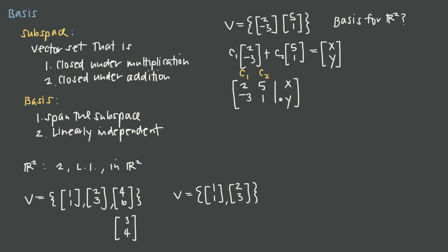We put this into reduced row echelon form. First, multiply row 1 by 1/2: we get [1, 5/2 | x/2]. Then to zero out the -3 in the (2,1) position, we add 3 times row 1 to row 2: 3×1+(-3)=0, 3×(5/2)+1=17/2, and 3×(x/2)+y = y + 3x/2.